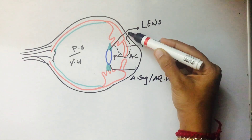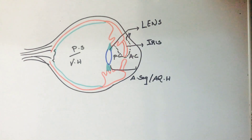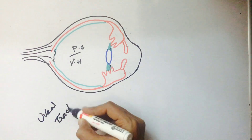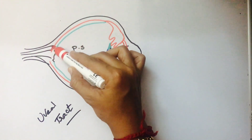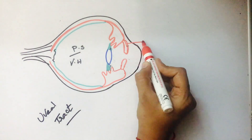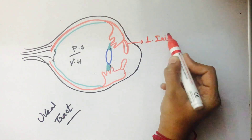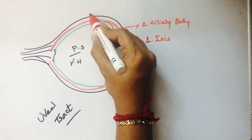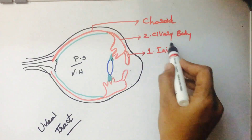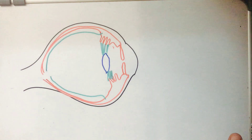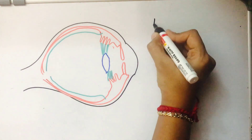Aqueous humor is secreted from the ciliary process and drained at the corneoscleral junction - we can discuss this in detail under glaucoma. Moving on to the uveal tract: this middle layer of the eyeball consists of the iris, ciliary body, and choroid.